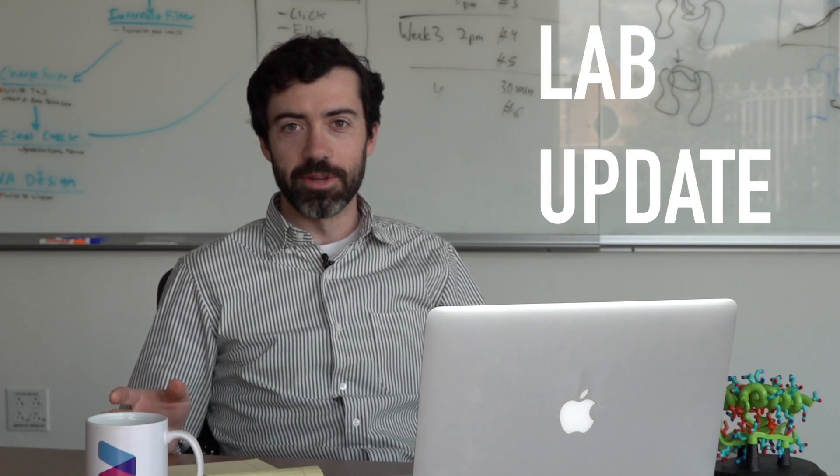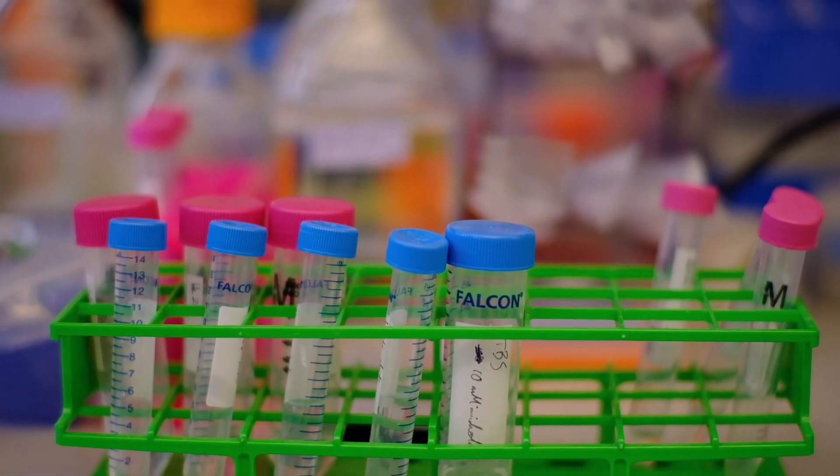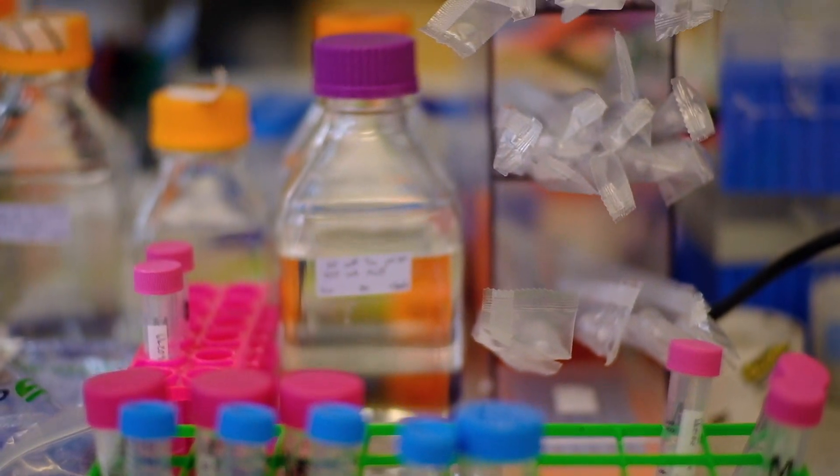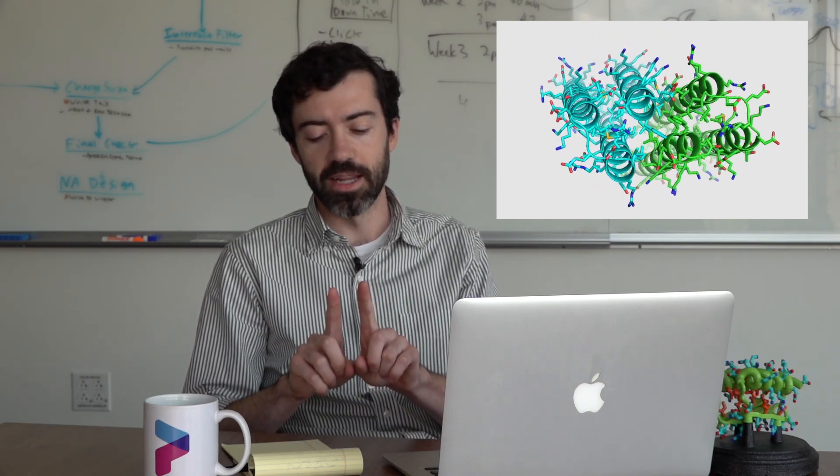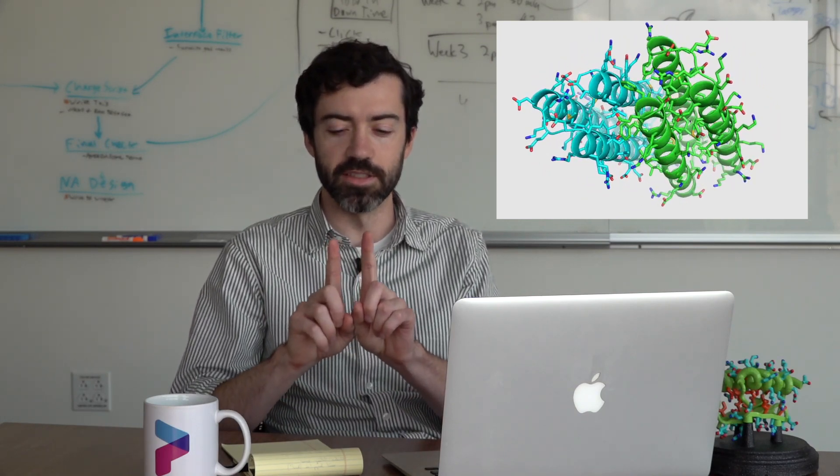Just a quick lab update for you on the symmetric designs. For most of the summer, we have been testing symmetric designs from Foldit players. These have been only the C2 symmetries, so just where two identical monomer units that are designed to come together. Each of these units should fold independently and then they should bind one another. When we run experiments or when we analyze them in the lab, they should behave as this well-behaved dimer.